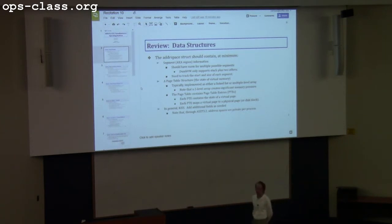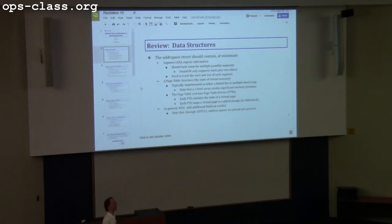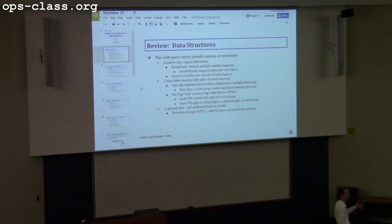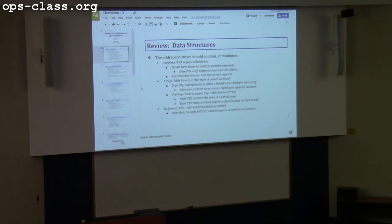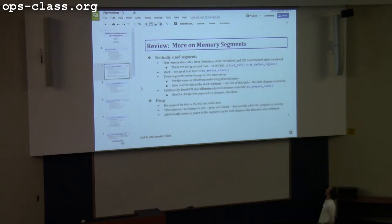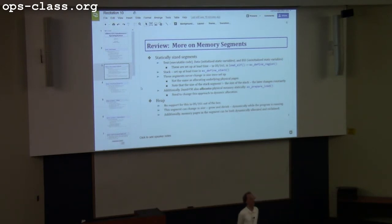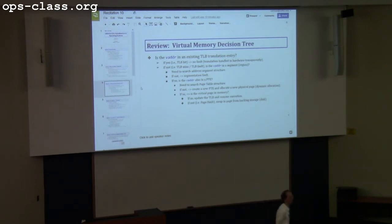By way of brief review, we're going to go through these slides very quickly. For people with questions on assignment 3.2, stop by office hours. In terms of data structures — because we will be talking about what you need to add to them for assignment 3.3 — for assignment 3.2, the main point is an address space, a representation of virtual memory for user processes. We had segments containing potentially valid addresses, and the page table containing a list of currently allocated virtual pages.